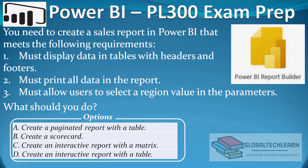As per the first requirement, we need to display header and footer on the report, and that feature is available only in a Power BI paginated report, also called an SSRS report. So option A will fulfill this requirement. Option B, a scorecard, does not support page header or footer. Similarly, options C and D — interactive matrix or interactive table reports — are Power BI Desktop reports where we don't have page header and footer functionality.